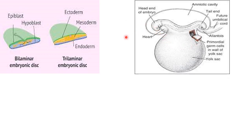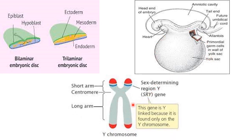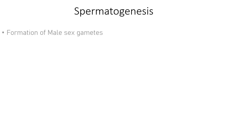Remember, those primordial germ cells after being formed actually move to the walls of the yolk sac — they move toward the allantoic part of the embryo. This is the foregut, this is the midgut, and this is the hindgut or caudal part; this is the cephalic part of the embryo. This entire bag-like structure is the yolk sac. This is the X chromosome and this is the Y chromosome, specifically found in males, on which the SRY gene is found.